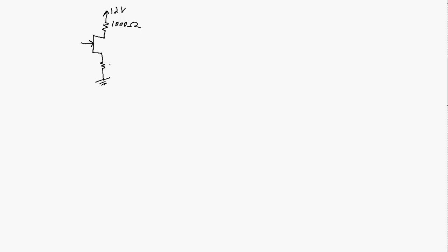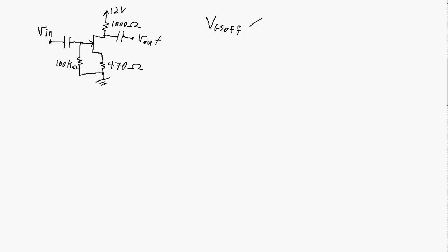Here's the first example — another self-biased circuit. We've got an N-channel JFET connected up to a 12-volt source, a 1000-ohm resistor in the drain, a 470-ohm resistor connected to the source, and a biasing resistor of 100 kilo-ohms at the gate. We're only looking at the DC part here, but just to remind you, we'll apply an input signal and if this is a common source amplifier, we'll have an output signal. The VGS off can range between minus 2 volts and minus 8 volts.